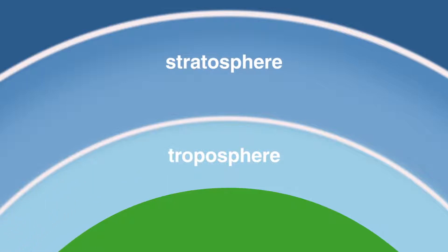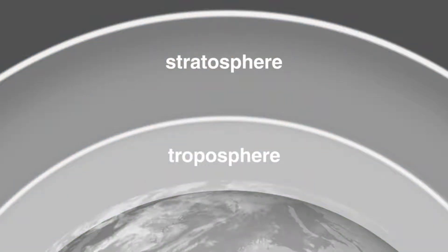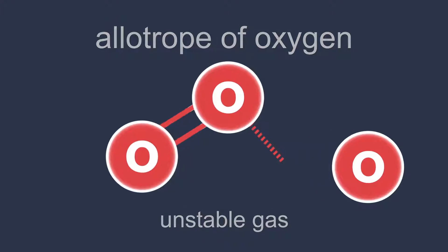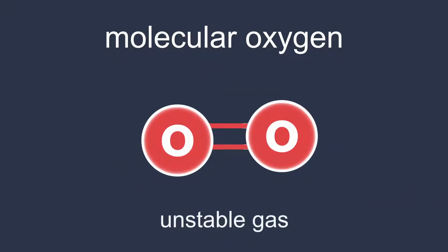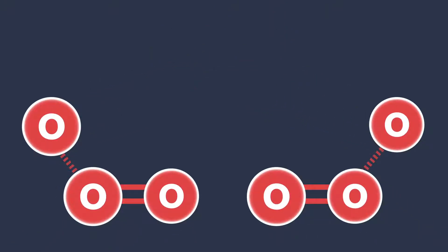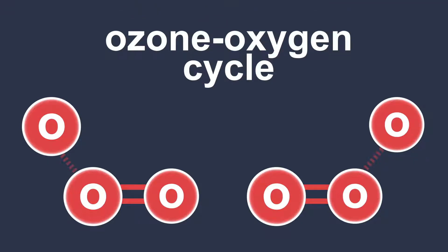So where does this good stratospheric ozone come from? Pause the video and think of the formula of ozone. Well, ozone is an allotrope of oxygen. Its molecules are made of three oxygen atoms bonded weakly together. It is an unstable gas which slowly decomposes back to molecular oxygen. The ozone in the stratosphere is continually being made and broken by ultraviolet light in the ozone-oxygen cycle.